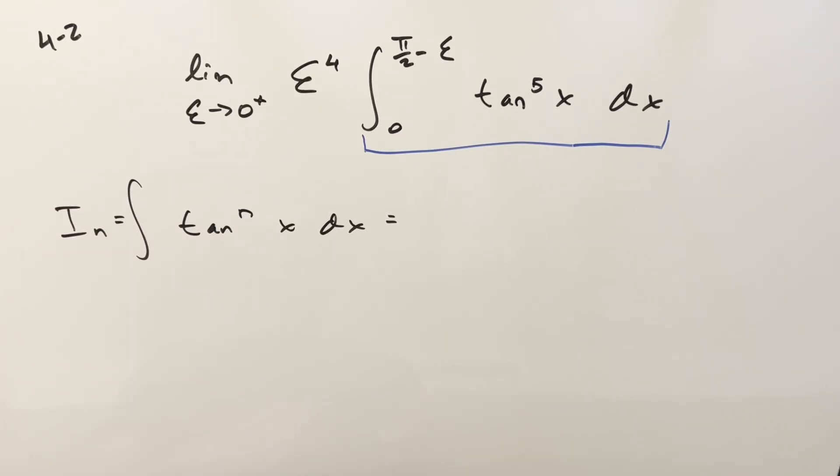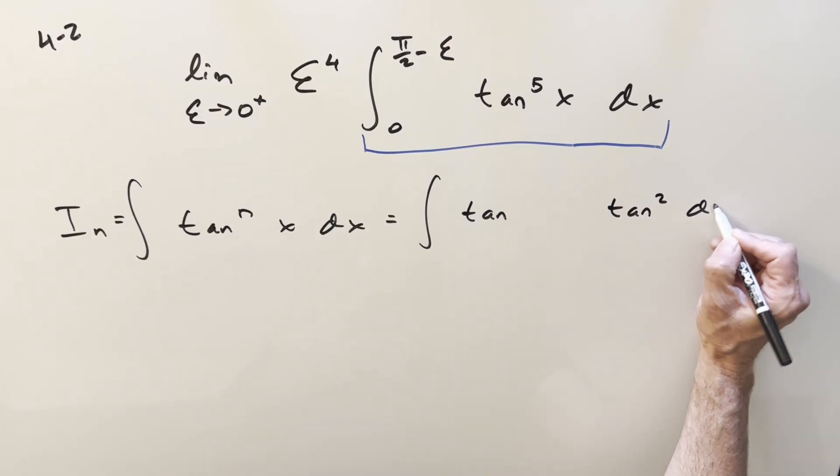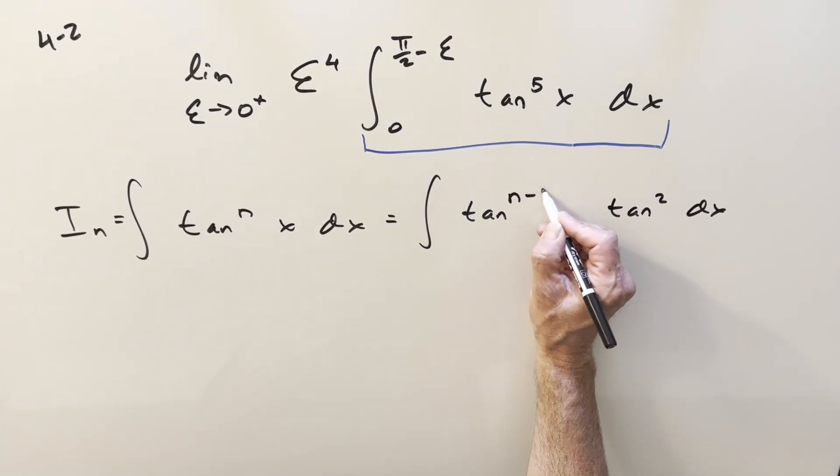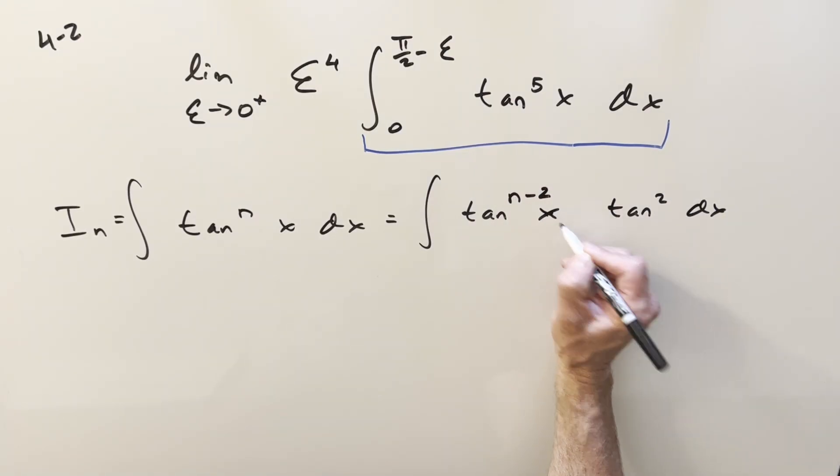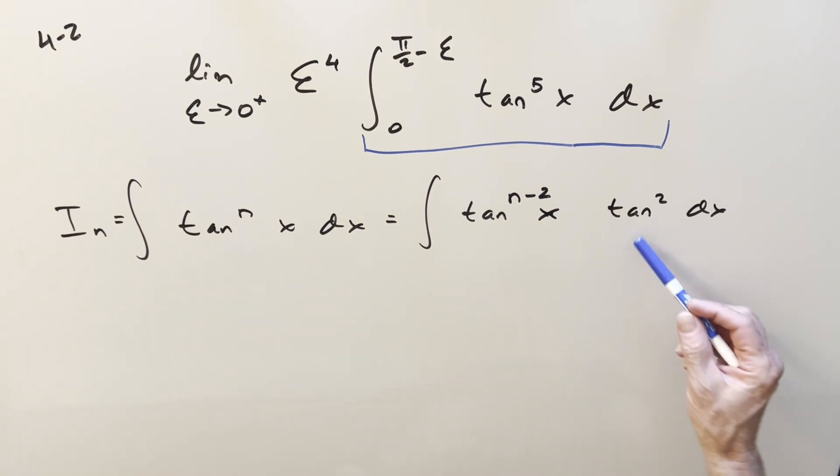We'll generalize it as some integral with an integer power n, and we'll call this integral i sub n. And then all I want to do is split it up and break out a tan squared, trying to do a u substitution on it. So if we break out tan squared over here, we'll have tan squared dx tan to the n minus 2 of x.